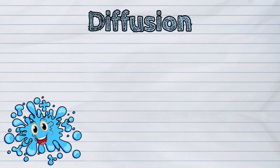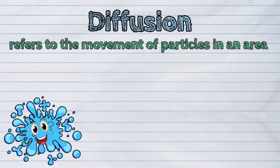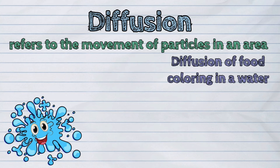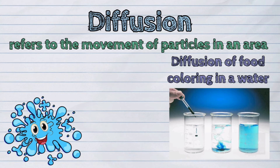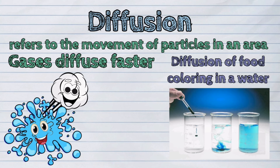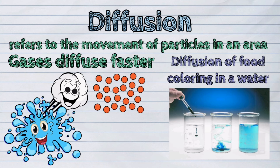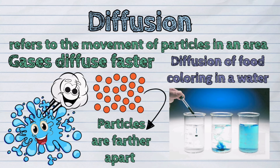The last property is called diffusion. This refers to the movement of particles in an area. An example is when you drop food coloring in a glass of water. Eventually, the food coloring will diffuse and the entire glass of water will be colored. Diffusion may occur in liquids. However, gases diffuse faster because their particles are farther apart from one another.